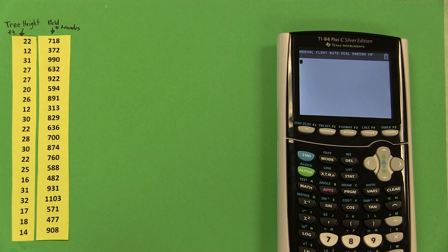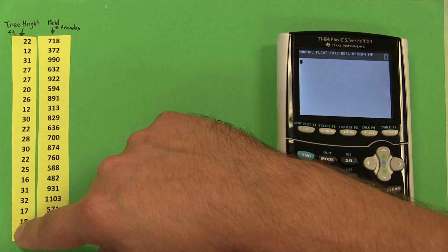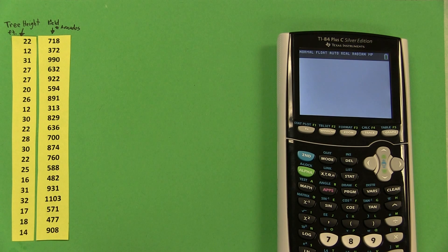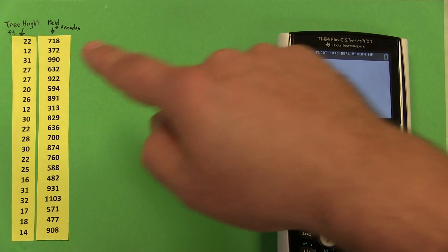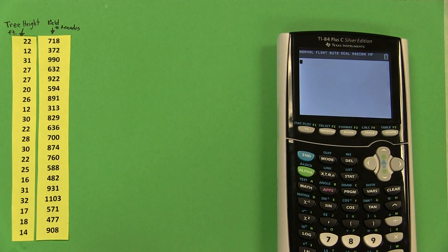In this video, we're going to use a TI-84 plus to figure out a regression equation, create a scatter plot, and even a residual plot. So to do this, we need bivariate data. Here's our data. This is a list of tree heights and corresponding yield. So these are avocado trees, and yield measures how many avocados that particular tree produced in a year. For example, this 20-foot tree produced 594 avocados.